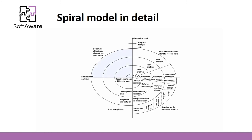The spiral model consists of four phases that divide the diagram into four quadrants. The first phase is usually called Determine Objectives. Objectives are the aim of the iteration. They include the main tasks required to achieve that aim. Possible alternatives that could be used to achieve the aim should be provided as well, and various constraints that should be considered must be described in detail.